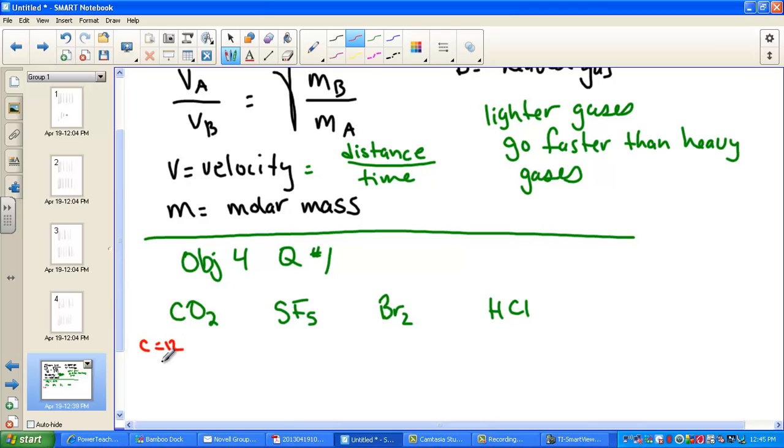Carbon, of course, weighs 12. Oxygen has 16 for its formula weight, giving me a total of 32. So all together, carbon dioxide molar mass is 44 grams. Sulfur has an atomic weight of 32. Fluorine weighs 19, but there's five of them in that formula. So we have to add 32 plus 19 times 5, and the molar mass is 127.